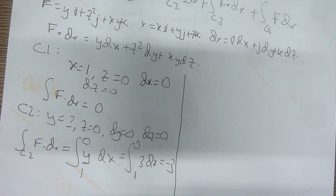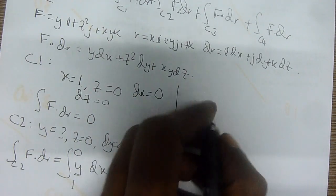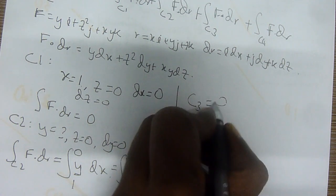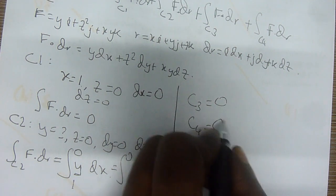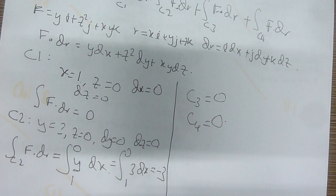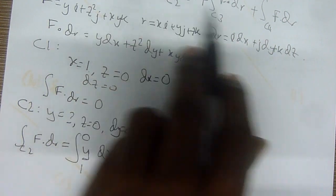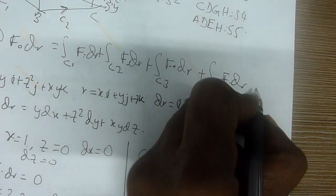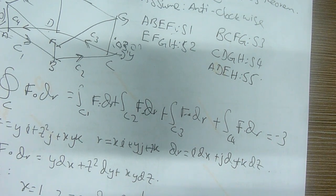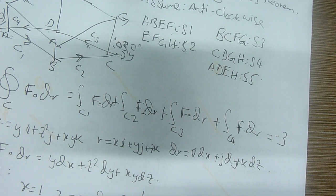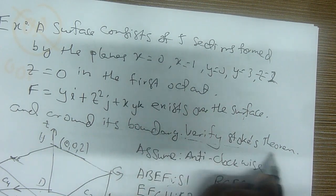What about C3 and C4? If you calculate C3 using the same method, you get 0. C4, you get 0. Therefore, the overall answer of this side is negative 3. Now we use Stokes' theorem because the question asks you to verify the Stokes' theorem.